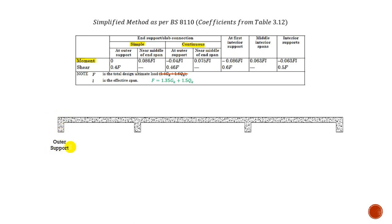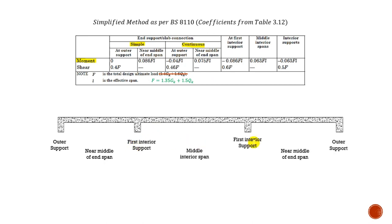You have the end support, the first interior support, and so on. The first column gives us 'simple' and 'continuous.' What is meant by the outer support? The outer support is simply this beam here — we have this beam and this beam, so this is a support. Between them we have a span — this is called the near middle of end span. Next we have the first interior support, then it's repeated. The outer support here, the near middle of end span, the first interior support — and the middle interior span is this one here.